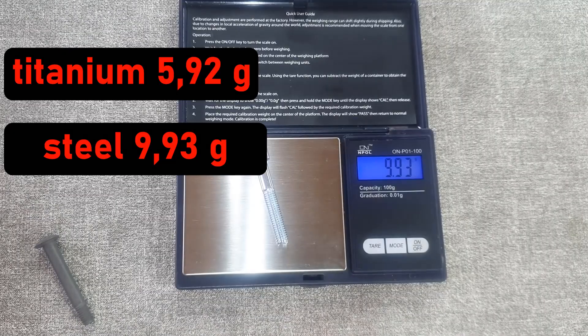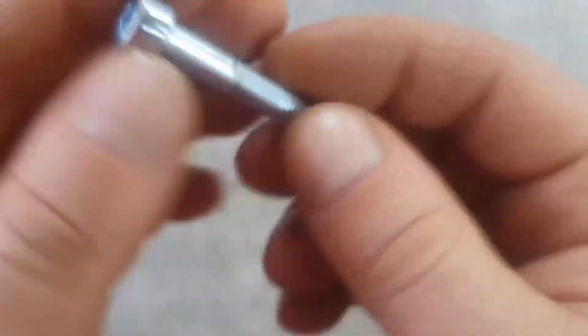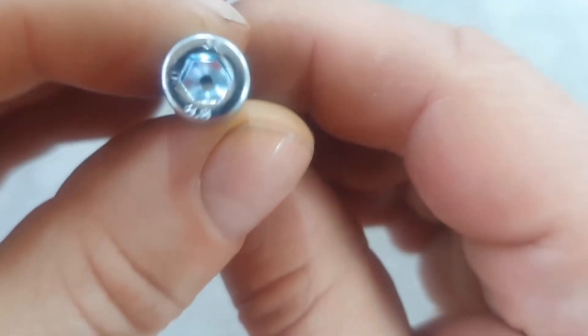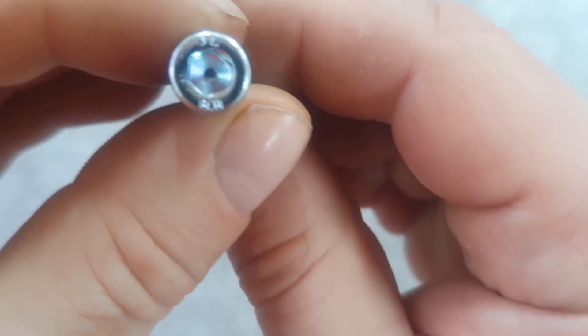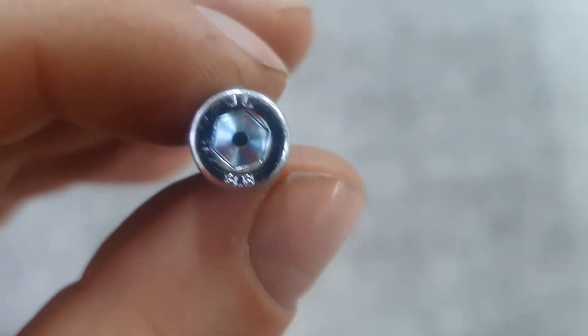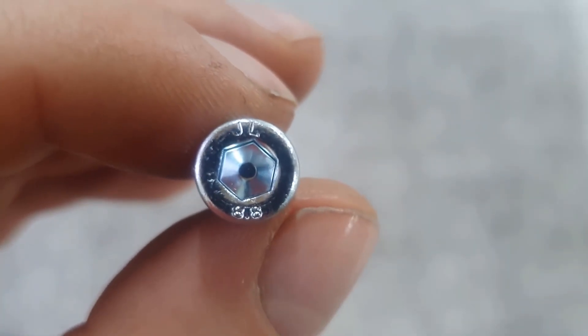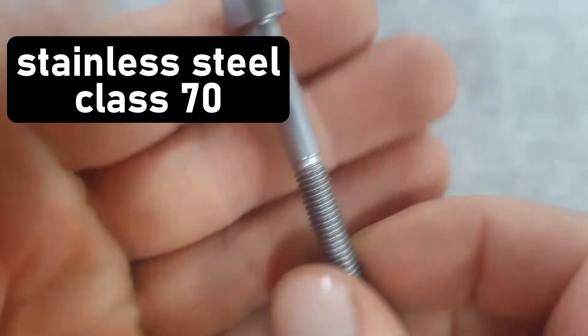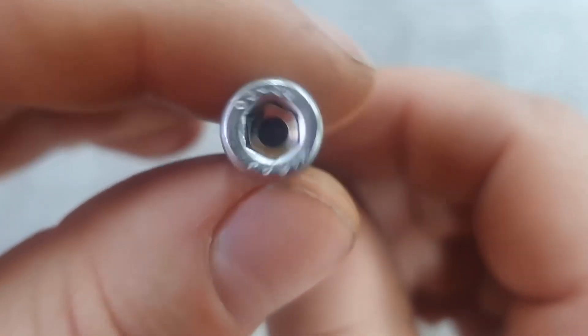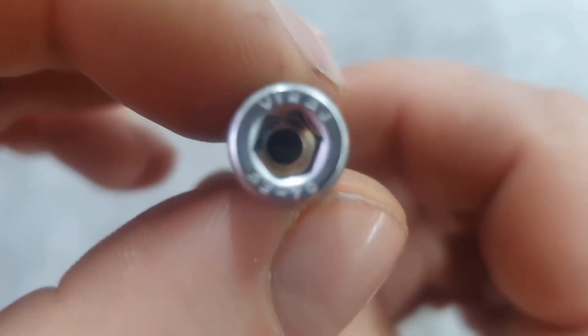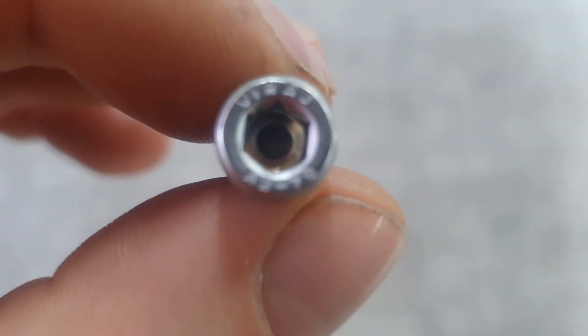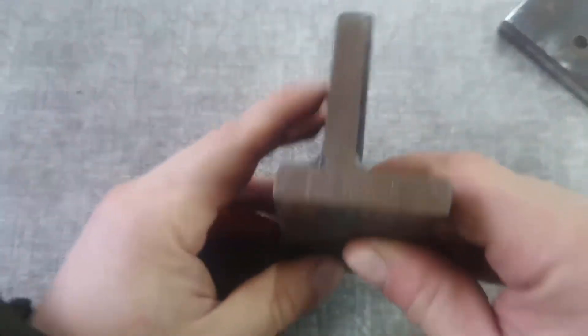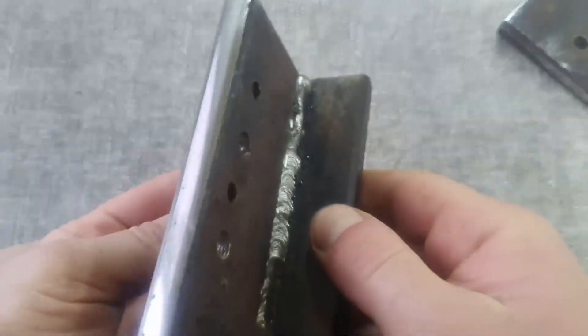In addition to titanium bolts for comparison, we will test bolts made of carbon steel. These are the most common bolts that you can buy in a hardware store, with the most common strength class, 8.8. I also managed to find bolts made of stainless steel for comparison. Judging by the markings, they have a strength class of 70, which is approximately equivalent to the strength class of carbon steel bolts.